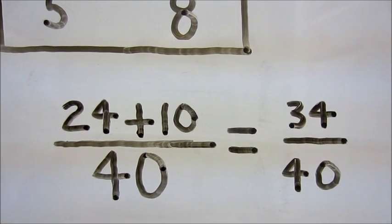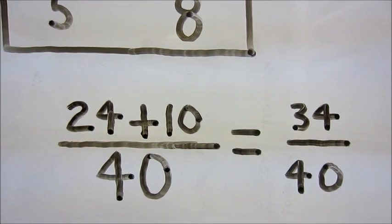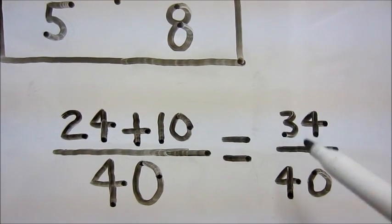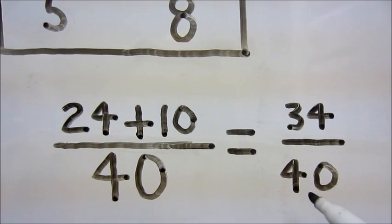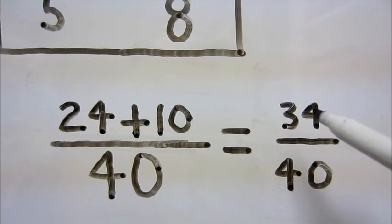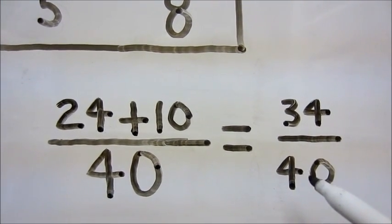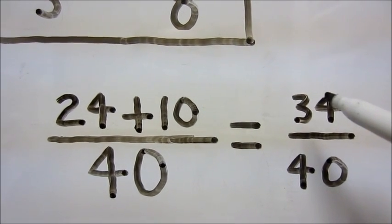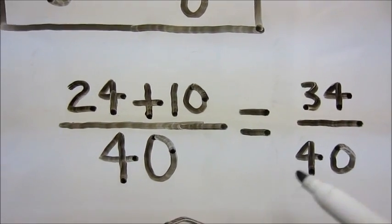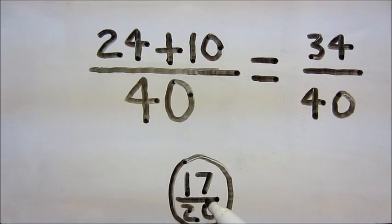All we need to do to get our final answer is simplify. Since both the numerator and the denominator are even numbers, we divide by 2 or chop each one in half. Half of 34 is 17, half of 40 is 20. Our final answer is 17 twentieths.